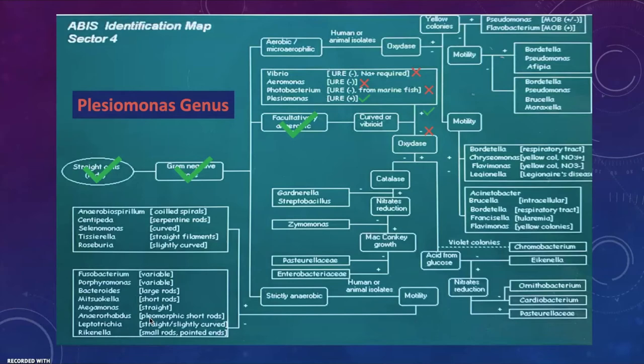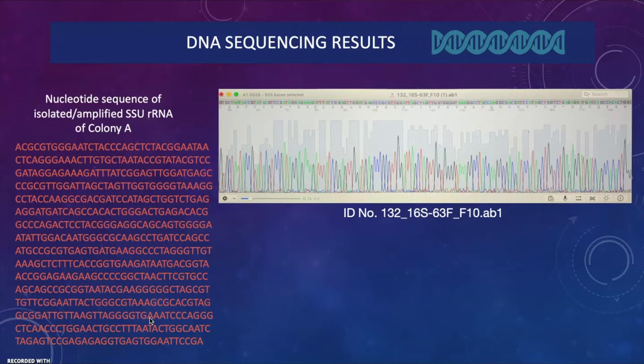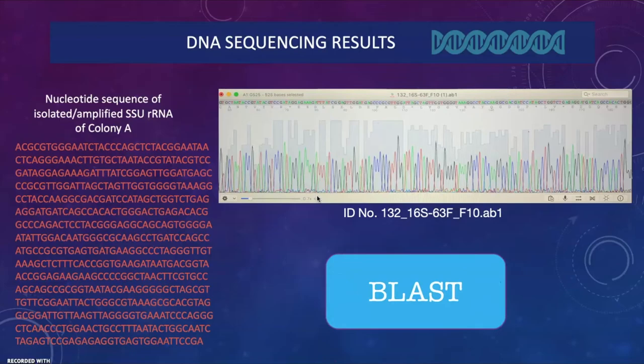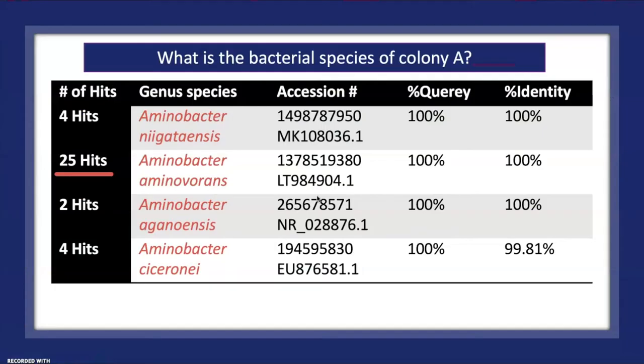After isolating colony A DNA, PCR was used to amplify the 16S ribosomal RNA and sent off for sequencing to help determine the closest related sequence. The sequencing results show very good peaks with little interference, indicating a likely very pure culture. There are 525 bases, which is slightly less than ideal but workable. We took this 525-base sequence and ran a BLAST search, which compares the known species with matches to the DNA sequence inputted.